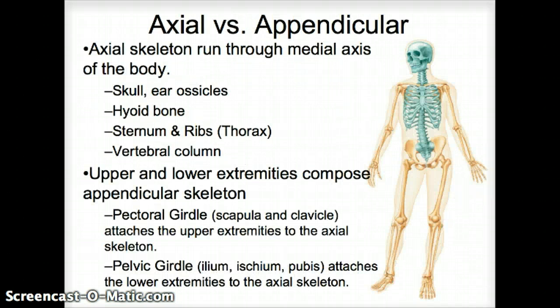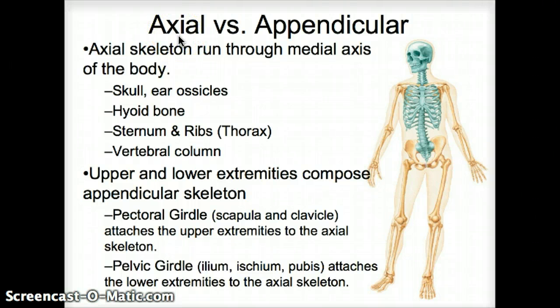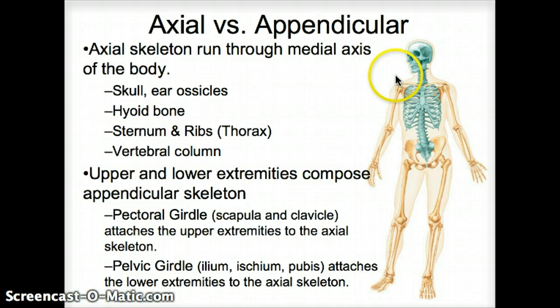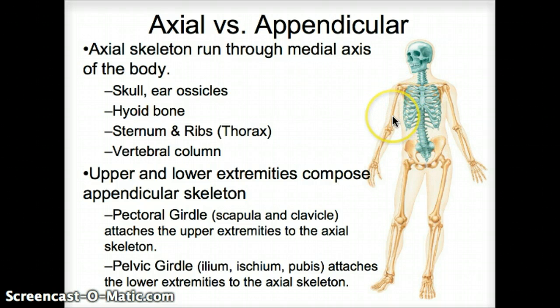We have the bones in our body and that's the skeletal system. When we start looking at the bones, our first differentiation is between the axial skeleton and the appendicular skeleton. It's kind of nice the way they draw it here — the bluish part is the axial skeleton and the brownish, beige-ish part is the appendicular skeleton.